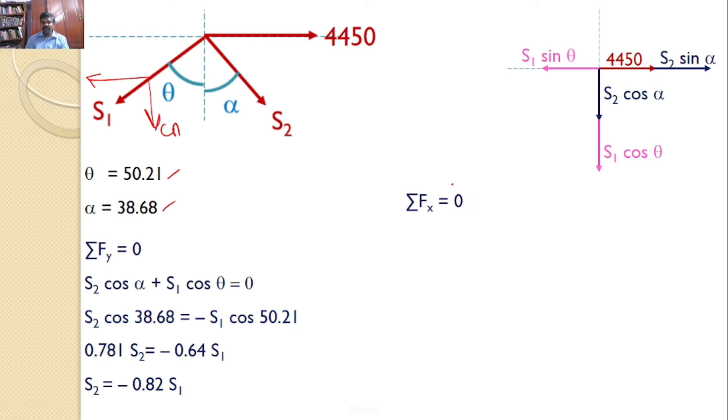Let us take sigma FX is equal to 0. There are three forces. Two forces acts towards right side and one force acts towards left side. So, you can write 4450 plus S2 sin alpha is equal to S1 sin theta. You know the values of alpha and theta and you know that S2 is equal to minus 0.82 S1. You can substitute all these three into this equation. Then you will get 4450 minus 0.82 S1 sin 38.68 is equal to S1 into 50.21.